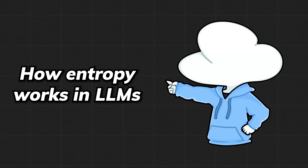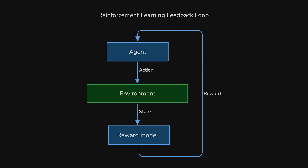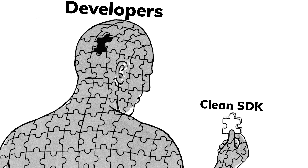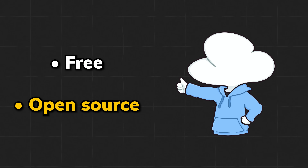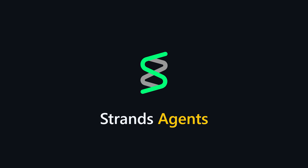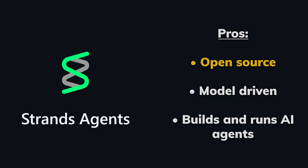Before we dive into how entropy works in LLMs, with how RL is now perfecting LLM applications like agent tech use, having an actual clean SDK that can support your agent tech development easily is also important. And that's why I want to put a free and open source toolkit on your radar called Strands Agents — an open source SDK that takes a model-driven approach to build and run AI agents in just a few lines of code.